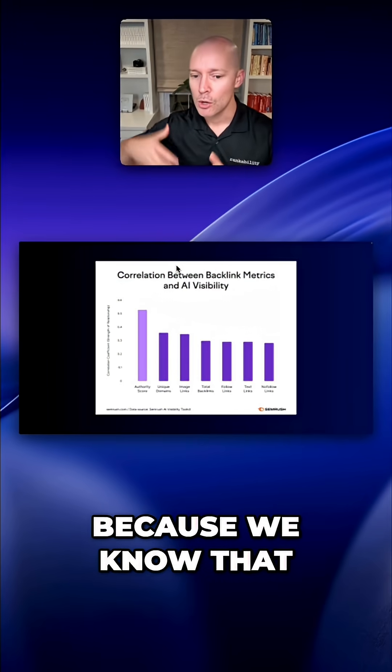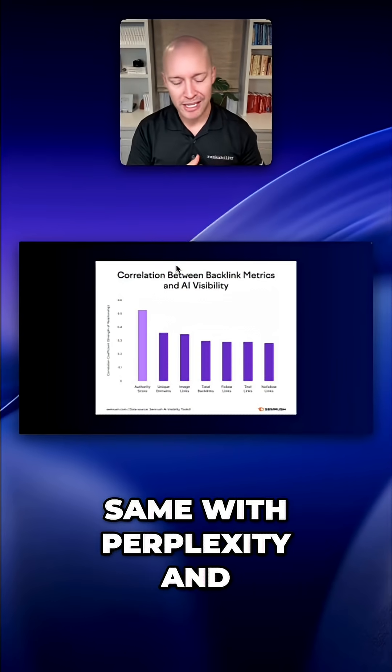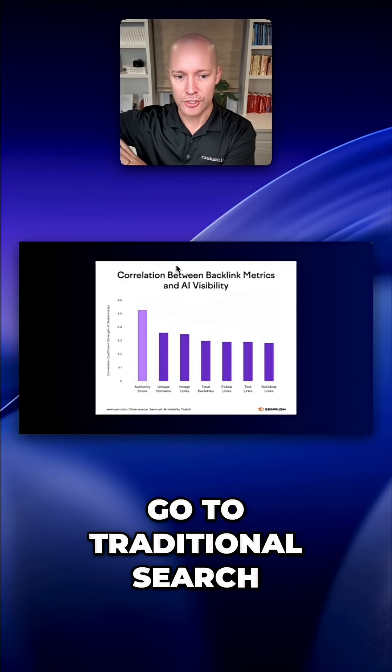And there's a reason for that because we know that when ChatGPT uses retrieval, same with Perplexity and all the other ones, they tend to just go to traditional search.